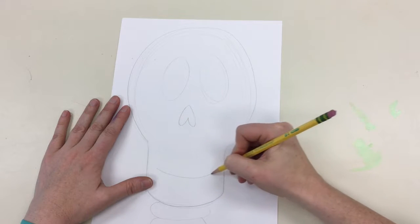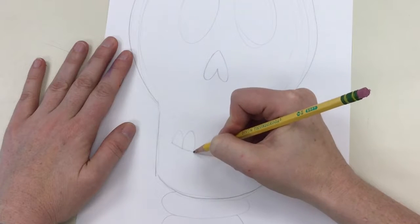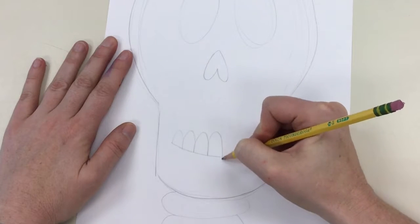For the teeth I just added upside down U's and just kind of hopped along the line, and for the bottom side of teeth I just made U's that connected together.